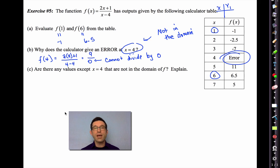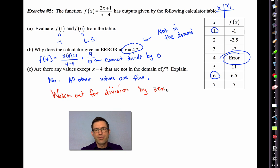Letter C says are there any values except x equals 4 that are not in the domain of f? Explain. Well, no. All other values are fine. But we have to worry about division. Watch out for division by 0. You just can't do it. Never can divide by 0. I'm going to clear this out. Pause the video again if you need to.